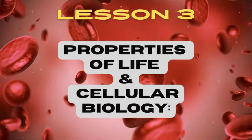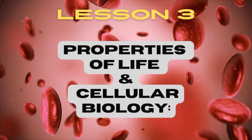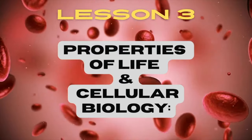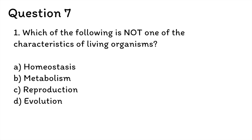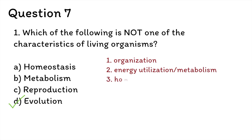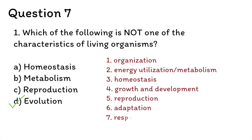Lesson 3: Properties of Life and Cellular Biology. Question 7: Which of the following is not one of the characteristics of living organisms? A. Homeostasis, B. Metabolism, C. Reproduction, D. Evolution. The correct answer is evolution. The seven characteristics are organization, energy utilization, homeostasis, growth and development, reproduction, adaptation, and response to stimuli. Check out UltimateGED.com for more on this.